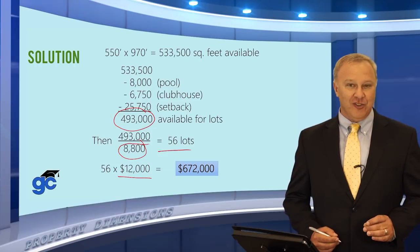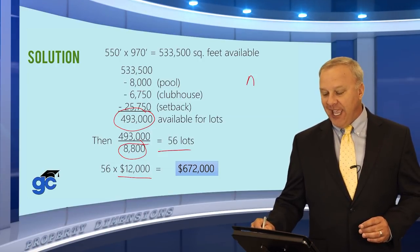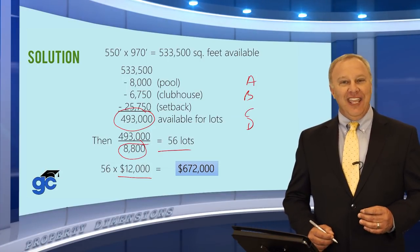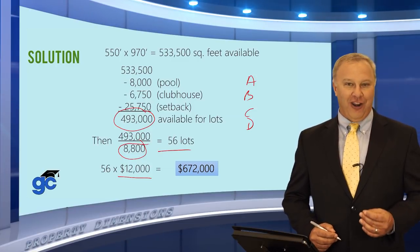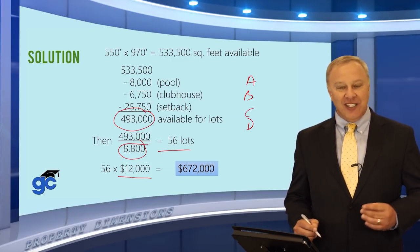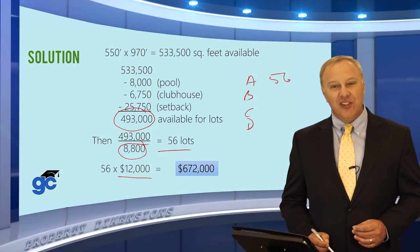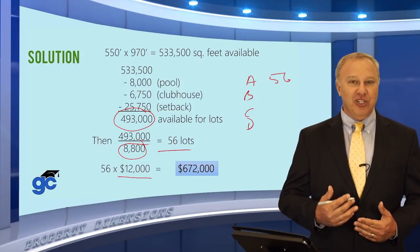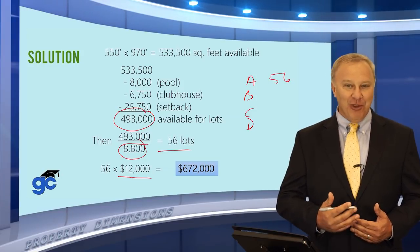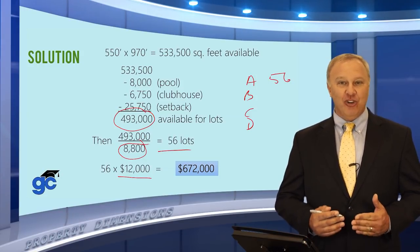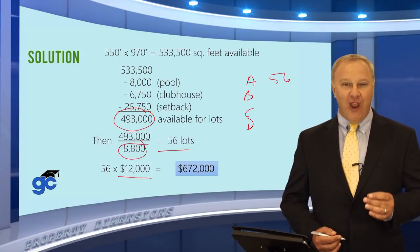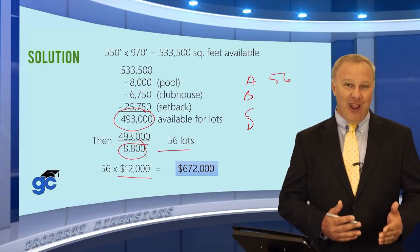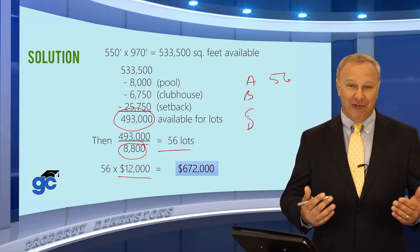An important tip: when reviewing answer choices, test writers often include intermediate numbers — like 56 (the number of lots) — as a trap answer. Always make sure you're answering the actual question asked. Getting the right number for the wrong question is still a wrong answer.